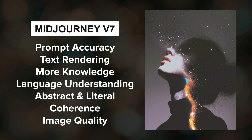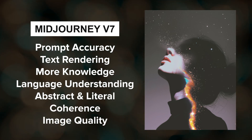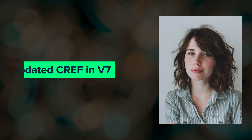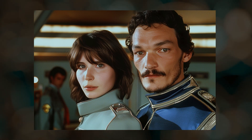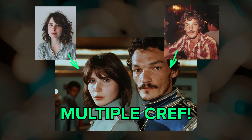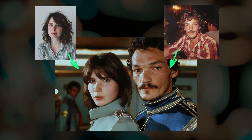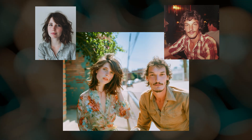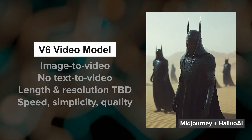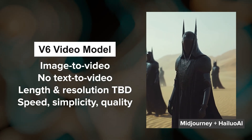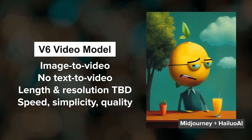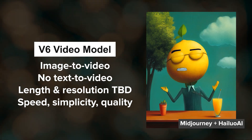V7 will also have improved understanding of both abstract and literal interpretations, and it will come with a major update to the character reference feature that will be more accurate and allow for multiple characters within a scene. If you are interested in some workarounds for multiple characters, I'll link a video down below. The V6 video model is also still a work in progress and should be released around the same time as the V7 image model.